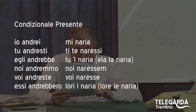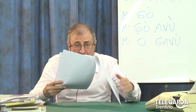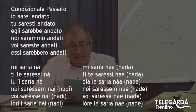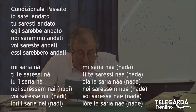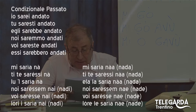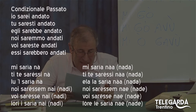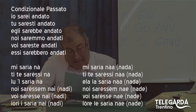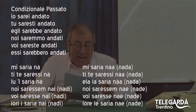Naturalmente lun naria al femminile diventa ella la naria, lori i naria al femminile diventa lore le naria. Andiamo adesso al condizionale passato: io sarei andato, tu saresti andato. Mi saria na, ti te saresti na, lul saria na, noi saresem nai o noi saresem nadi, voi sarese nae o voi sarese nadi, lori saria nai o lori saria nadi.